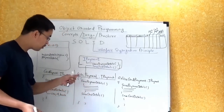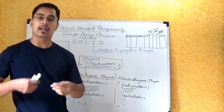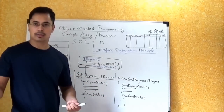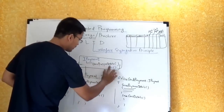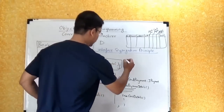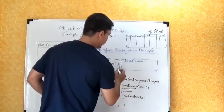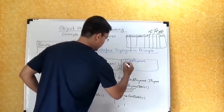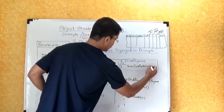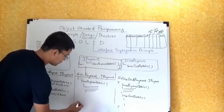This is breaking the Interface Segregation Principle, because we are forcing the CashPayment class to implement iPayment in a way that is not totally relevant to it — card details are not relevant to CashPayment. The solution is to remove SaveCardDetails from the iPayment interface and create another interface called iCardPayment, which has the SaveCardDetails method.